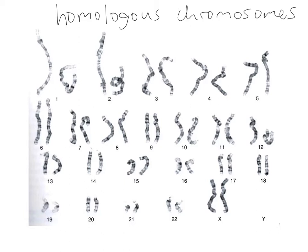Are there homologous chromosomes in this picture? Let's talk about the easiest one to pick out — the X chromosome, down here at the bottom. That's two homologues. Those are homologues.